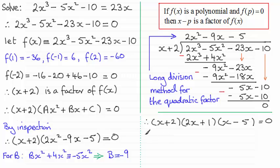So that means that each of those factors could equal 0. So x plus 2 could equal 0. Or 2x plus 1 equals 0. Or x minus 5 would equal 0. And therefore that would lead to x equaling minus 2. Or x equaling minus 1 half. Or x equaling 5.